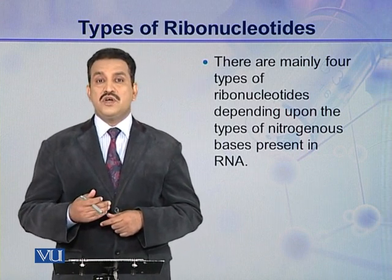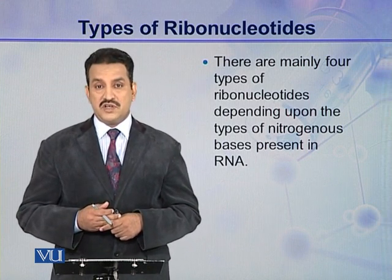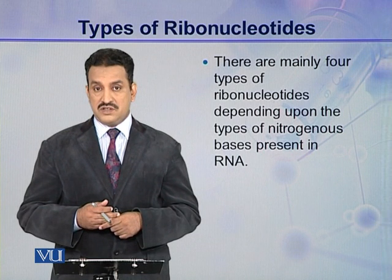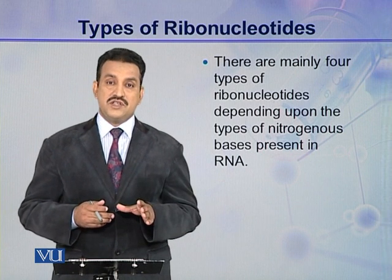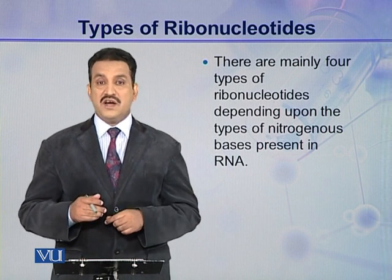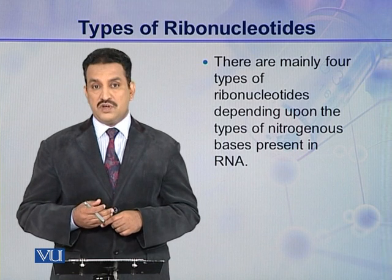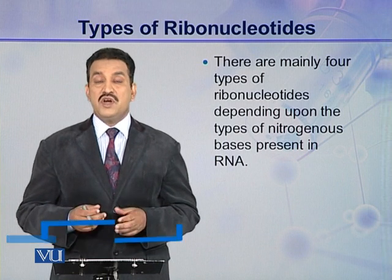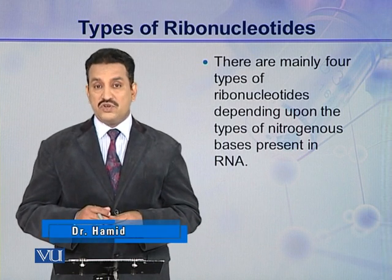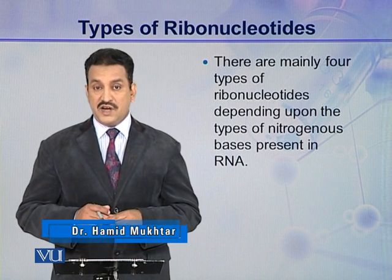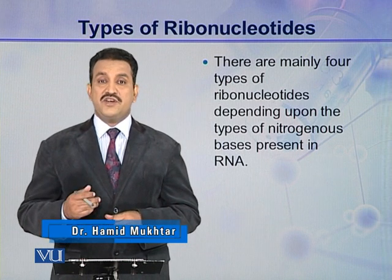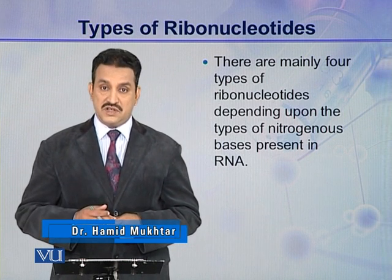the other one is phosphoric acid, and the third one is nitrogenous base. The two components — phosphoric acid and ribose sugar — they are the same in all the ribonucleotides, and the only difference is in the nitrogenous base.